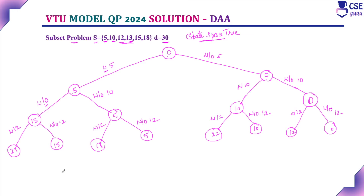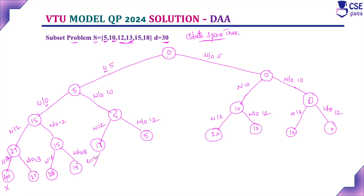Next component is 13. With 13 on the 27-branch: 27 + 13 = 40, which exceeds 30 — this is a dead end. Without 13: 27 only. With 13 on the 15-branch: 15 + 13 = 28. Without 13: 15. With 13 on the 17-branch: 17 + 13 = 30 — this is a solution! We stop here; no need to proceed to the next level. Without 13: 17 only.